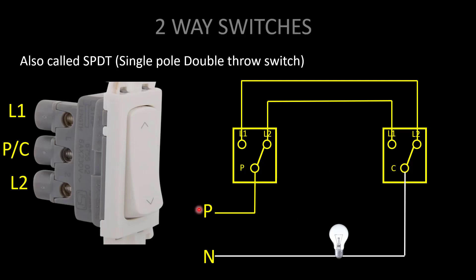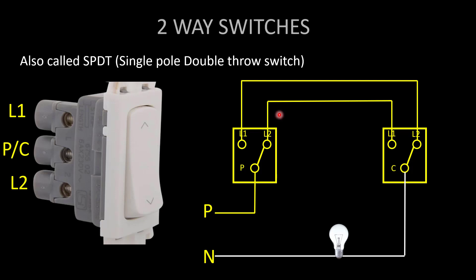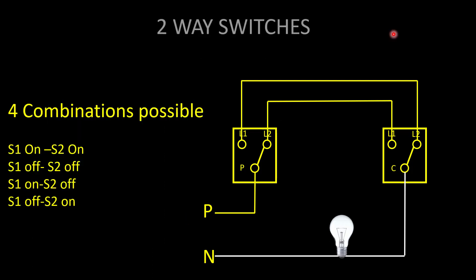How to wire a two-way switch? The power supply or phase is directly connected to the P or C terminal — the common terminal. The L1 of the first switch is connected to L2 of the second switch, and L2 of the first switch is connected to L1 of the second switch. For two-way switches, four wires come into a switchboard: two common wires and an earth wire, plus phase. In one-way switches, only phase and earth come.